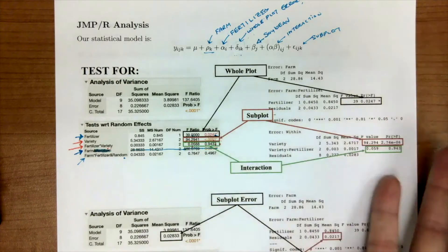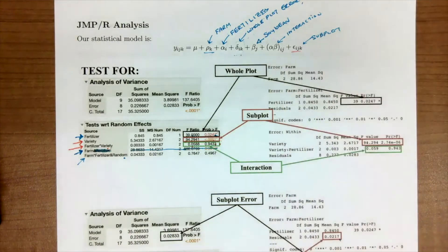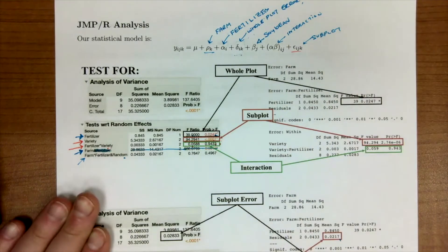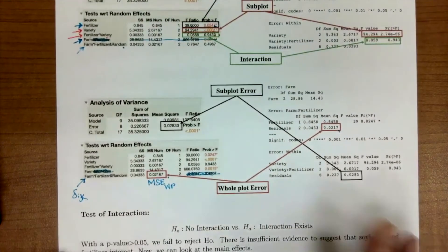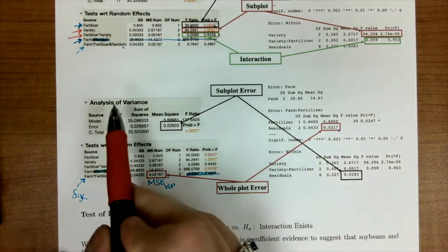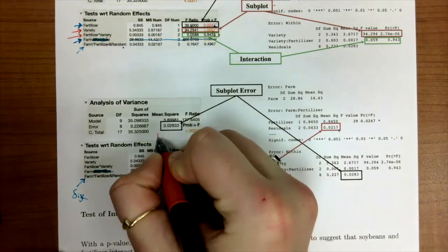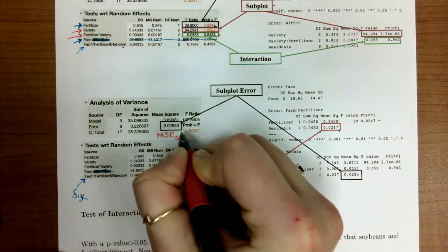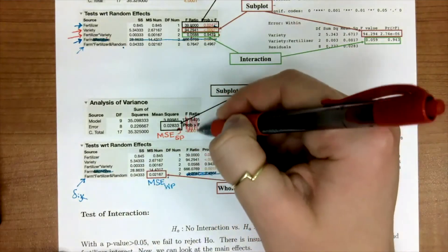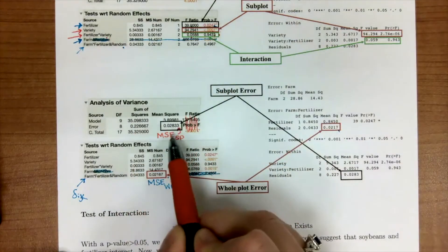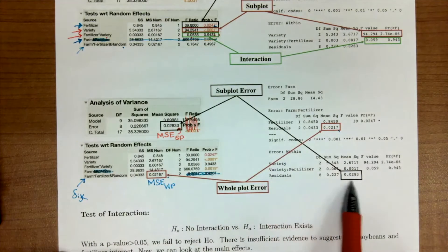Our last thing that we want to be able to identify from our ANOVA tables and output is the subplot error. If we scroll back down to this plot where we're talking about the errors, for my JMP users, your MSE of subplot is right here - again, you're not using those, all you're going to use this table for is the MS of the subplot. For my R users, it's down here in the residuals.